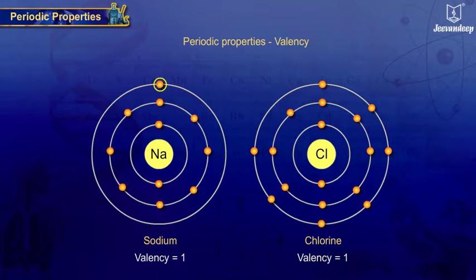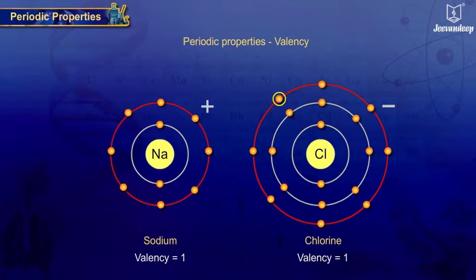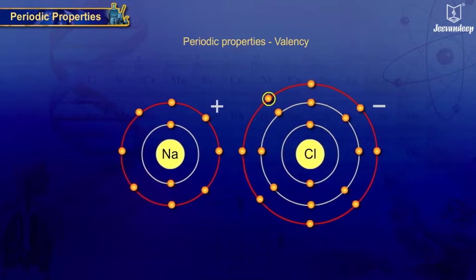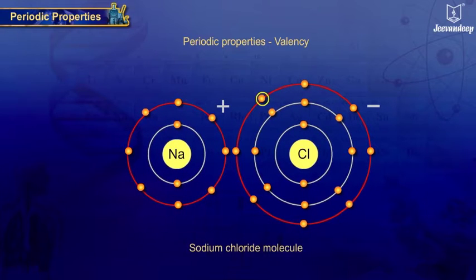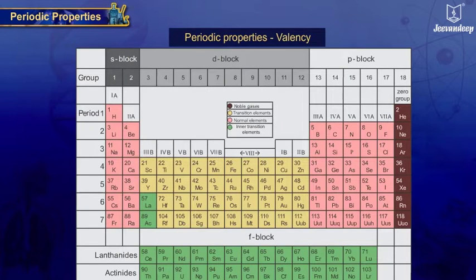Sodium and chlorine both have valency one, as sodium gives one electron and chlorine takes one electron in order to achieve stable electronic configuration, that is octet - eight electrons in the outermost shell - thus resulting in the formation of NaCl, that is sodium chloride.